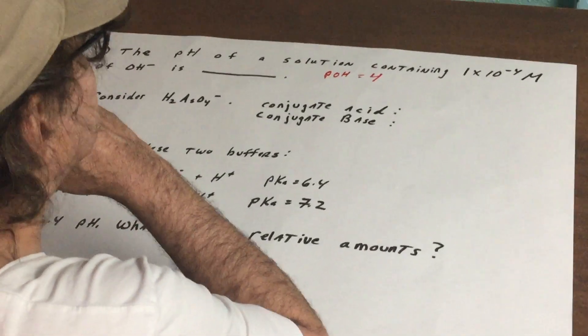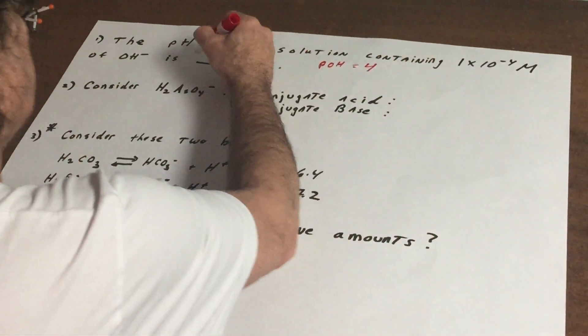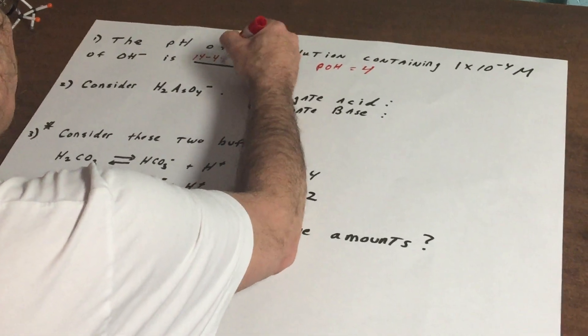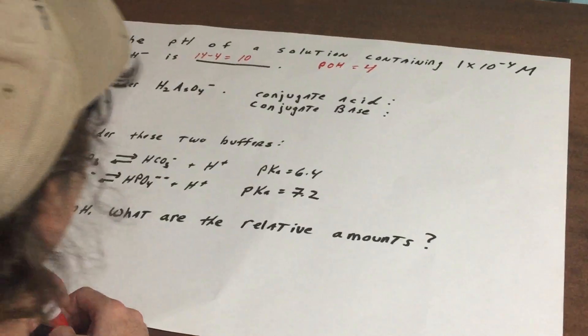So the pOH is going to be four. If the pOH is four and we know that 14 minus that number gives me the pH, that gives me the pH would be 10.